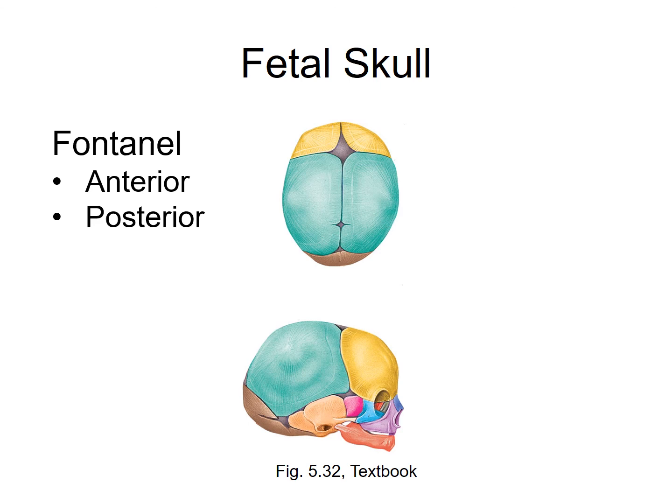The fontanelles also allow compression of the skull during the birthing process. If you've ever seen the head of a child after a vaginal birth, it tends to be sort of cone-shaped as the cranial bones shift. This is very normal, and in most cases the head very quickly returns to a more normal conformation.